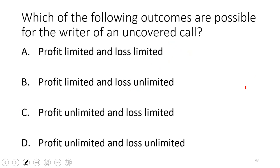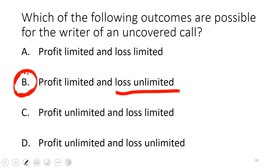Which outcomes are possible for the writer of an uncovered (naked) call? Writing a naked call means agreeing to sell stock you don't own. If you're right and the option expires worthless, you keep the premium — that's the maximum gain. But your loss is unlimited because the stock could rise indefinitely. This is a mirror question of the covered call question in the FINRA practice test, where loss is limited and profit is limited.